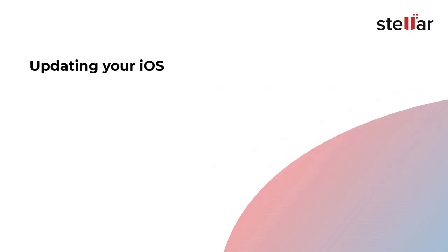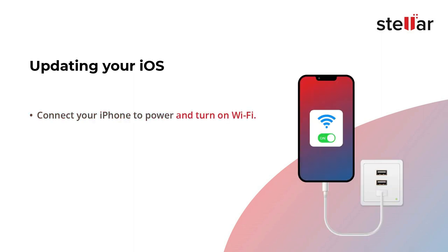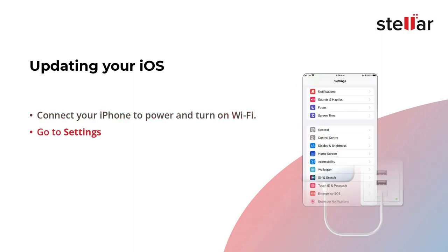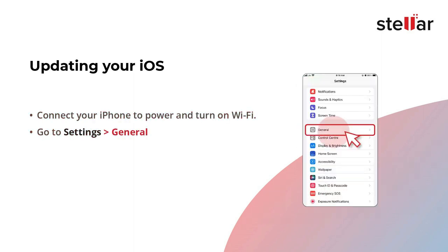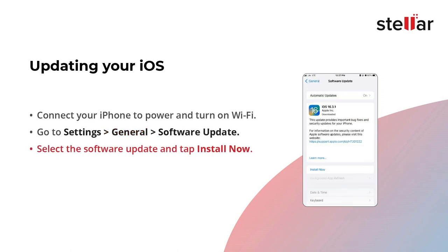Here's how to update your iPhone: Power on and turn on Wi-Fi. Go to Settings, General, Software Update. Select the latest software update and tap Install Now.